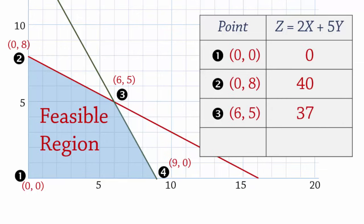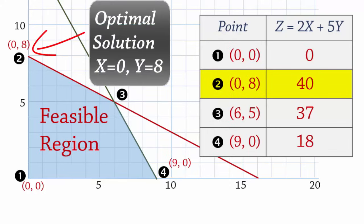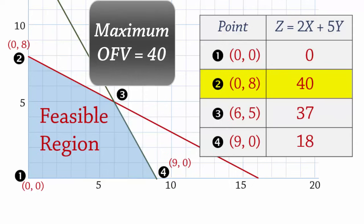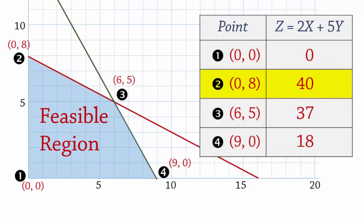And finally, at point 4 with 9, 0, z equals 2 times 9 plus 5 times 0 which gives 18. So here we have it, point 2 provides the highest value of the objective function. So the optimal solution occurs at point 2 and it is x equals 0 and y equals 8. And the corresponding objective function value is 40. And that concludes the solution to this LP problem.